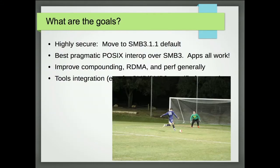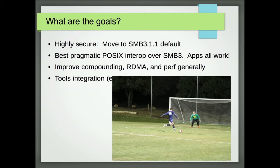Our goals: one is to move to SMB 3.1.1 everywhere we can — not quite there yet. Samba 4.7 has helped, and we're now negotiating 3.1.1 a lot more. We want the best pragmatic interoperability. We have easy performance work and the RDMA work we've talked about, plus compounding work. We also need to extend the set of user space tools — things like enumerating snapshots, querying, setting ACLs. We have tools for backup applications and getting/setting ACLs, but we need more.